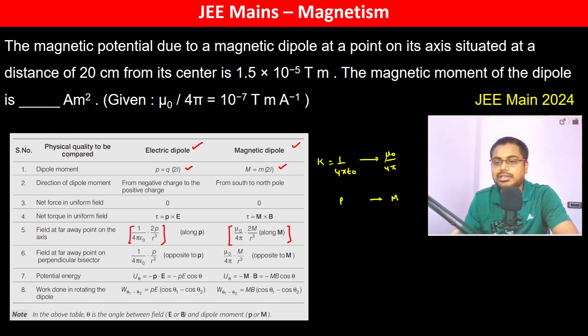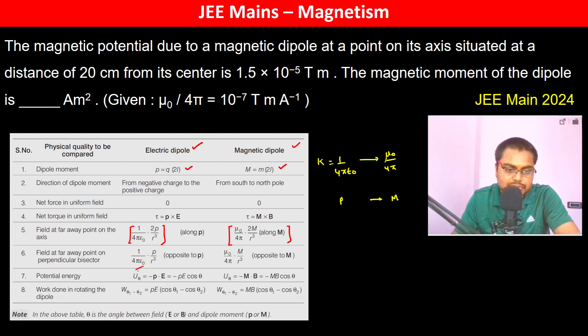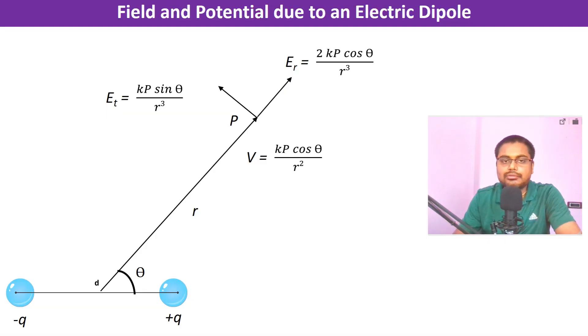We have a better understanding of electric dipole, so it's better if we compare both of them together. We can see very clearly that p gets replaced by m. Now we go to the formula of potential.